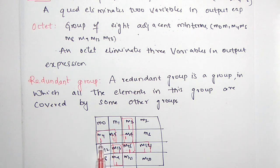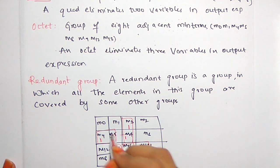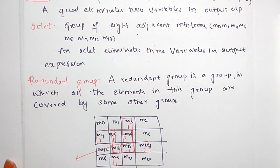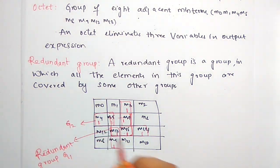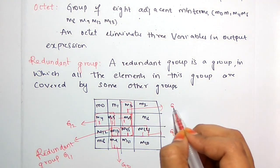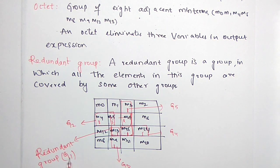These four minterms forming the quad are already involved in other groups. M5 is involved in this pair, M7 is involved in this pair, M15 is involved in this pair, and M13 is involved in this pair. Since all elements in this group are covered by some other groups, that is called a redundant group — G1. And the other groups are pairs G2, G3, G4, G5. That's why it becomes a redundant group.